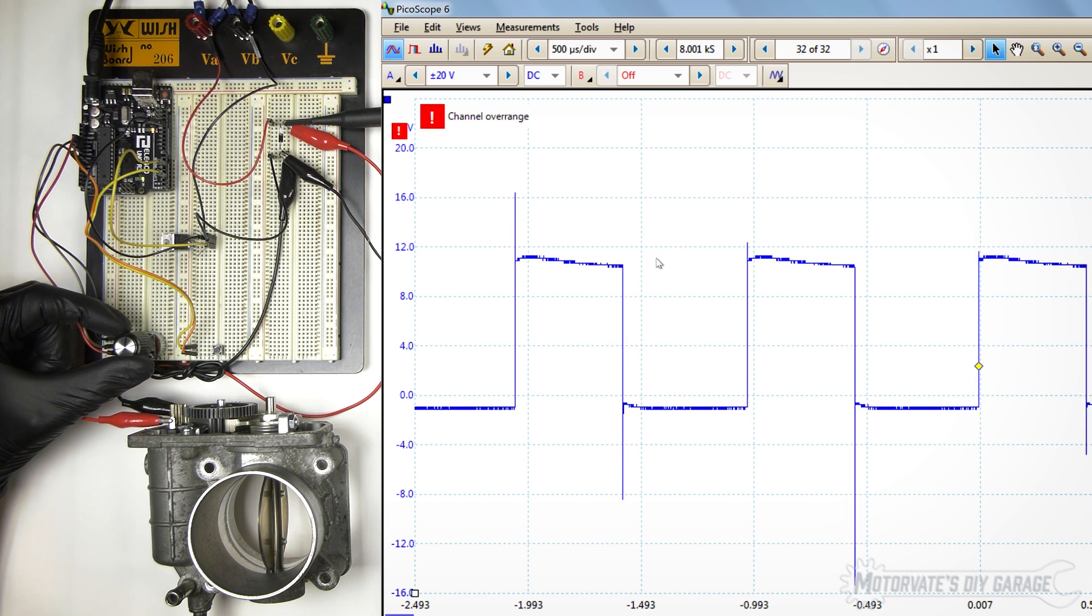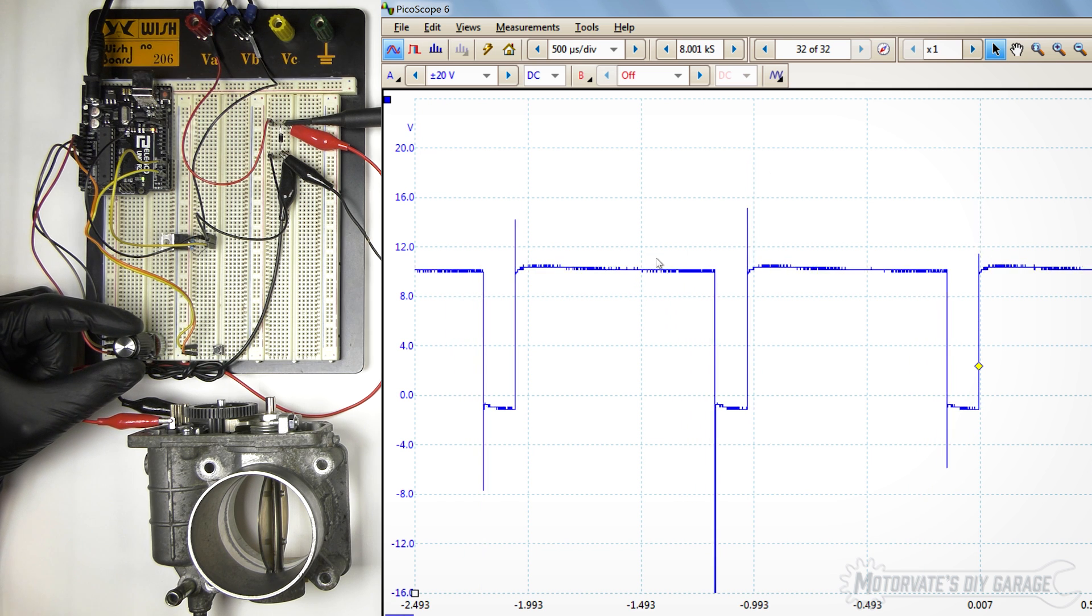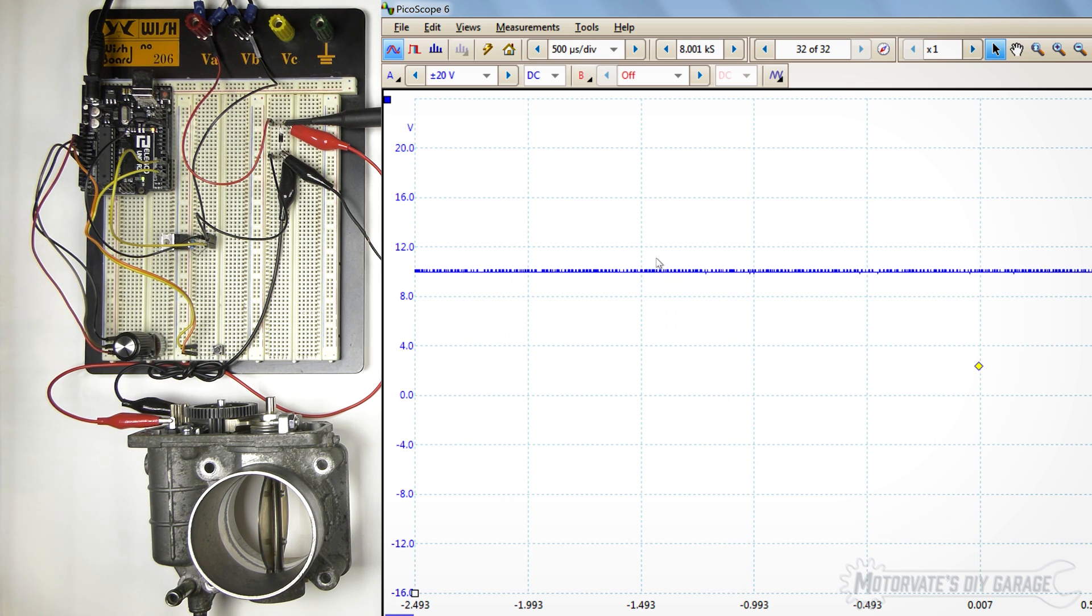Our throttle body is wide open throttle. And if I go all the way to 100%, the winding sound goes away. Because, we have a constant voltage going to a throttle body. We are no longer doing a pulse width modulated signal.